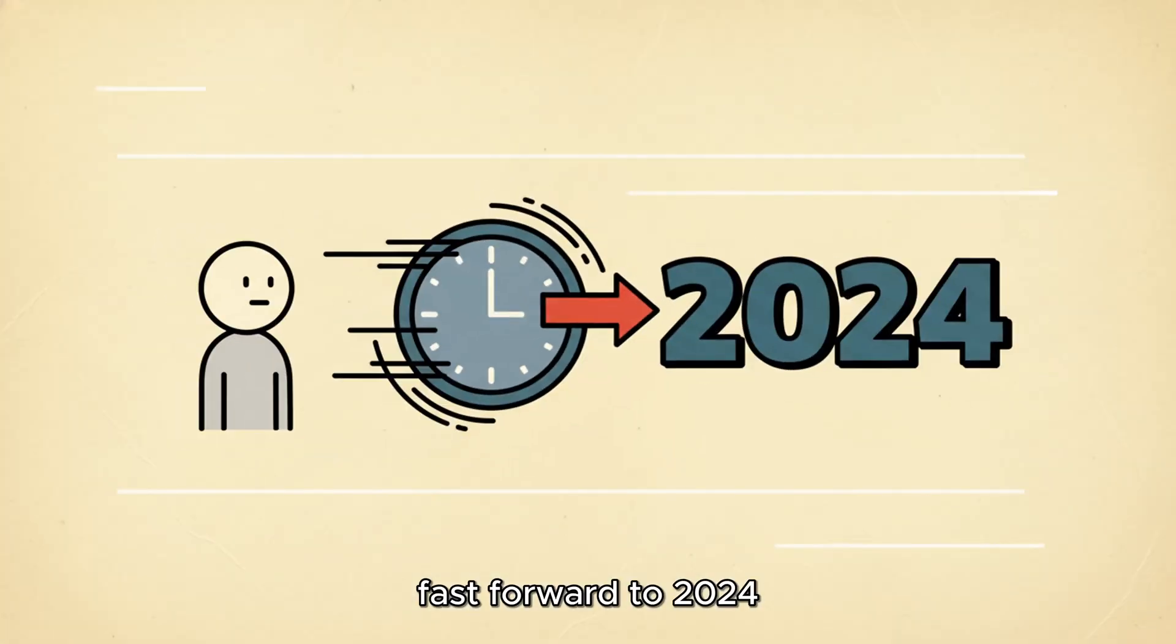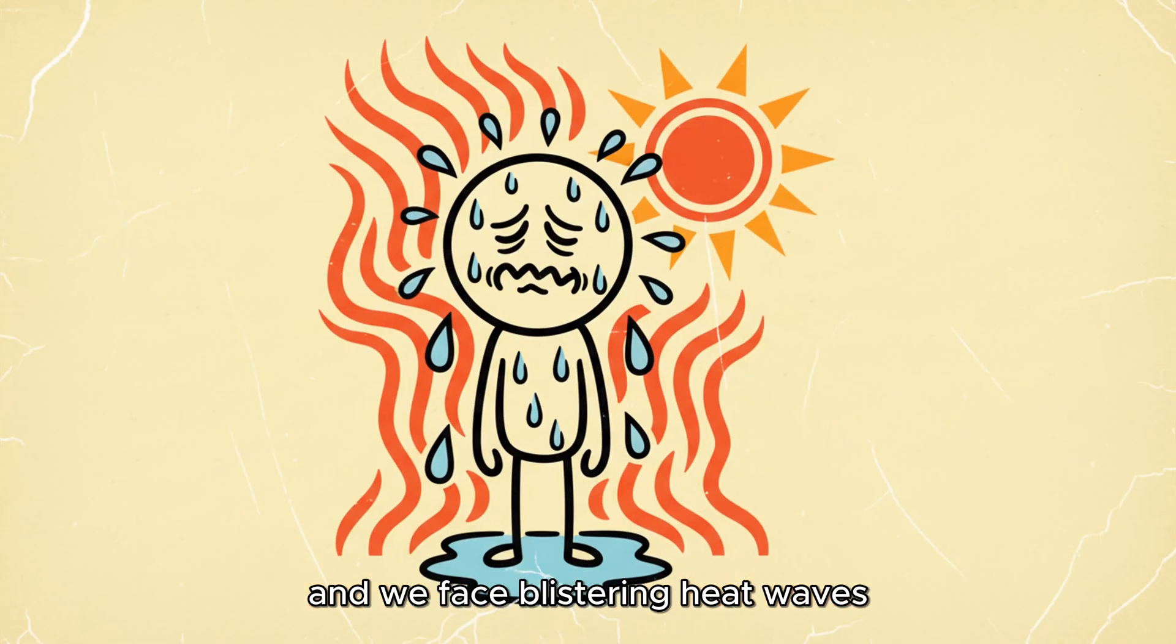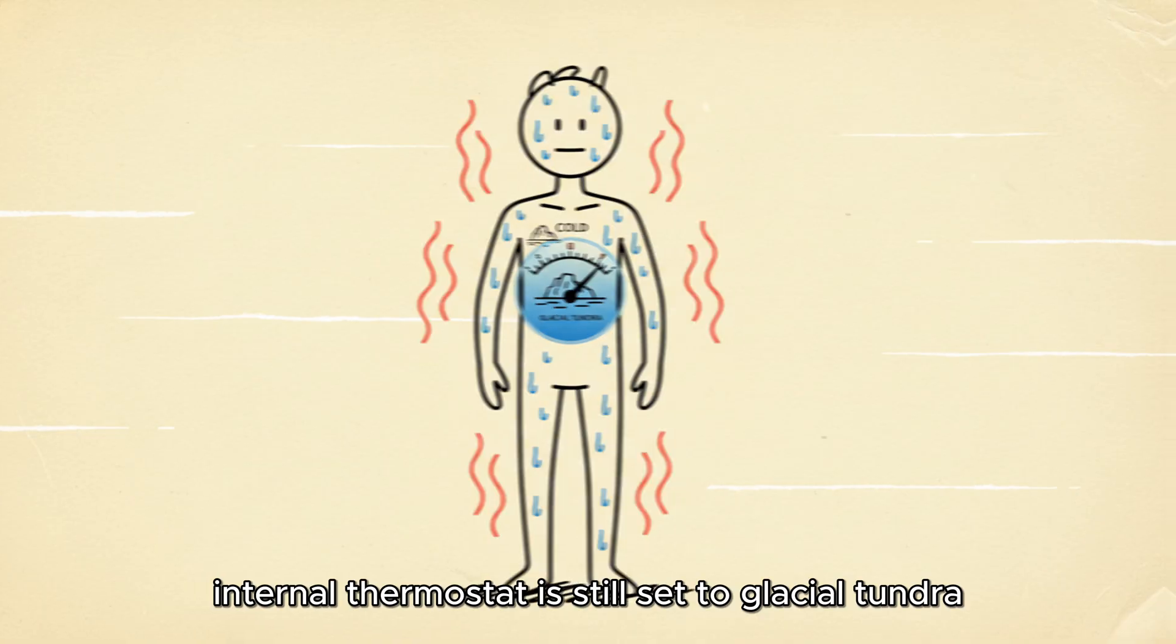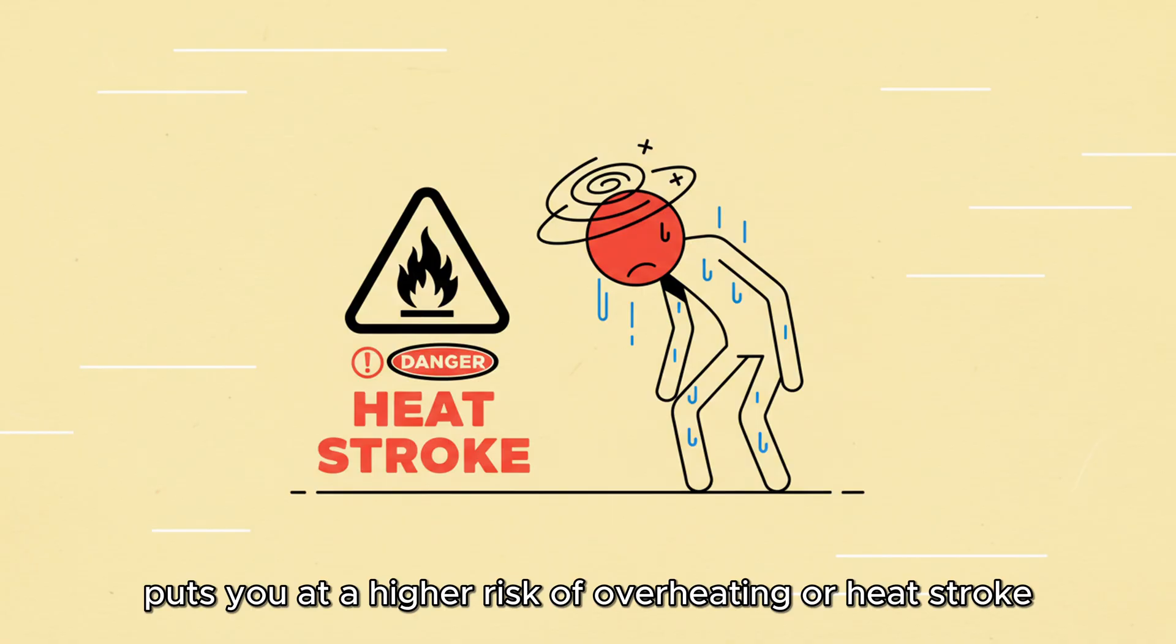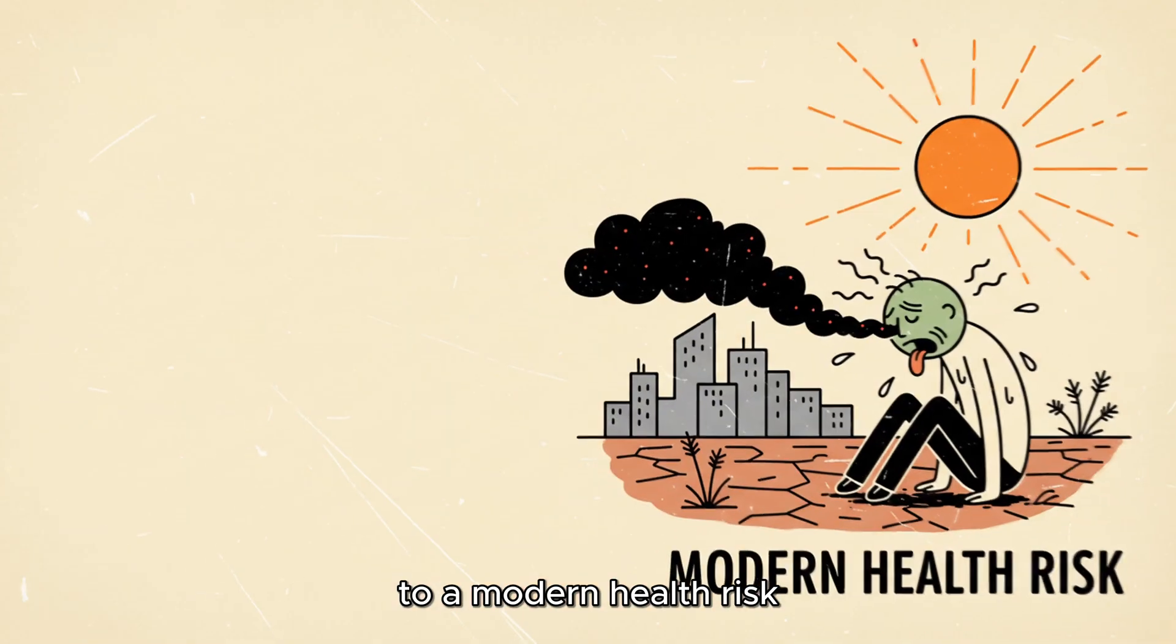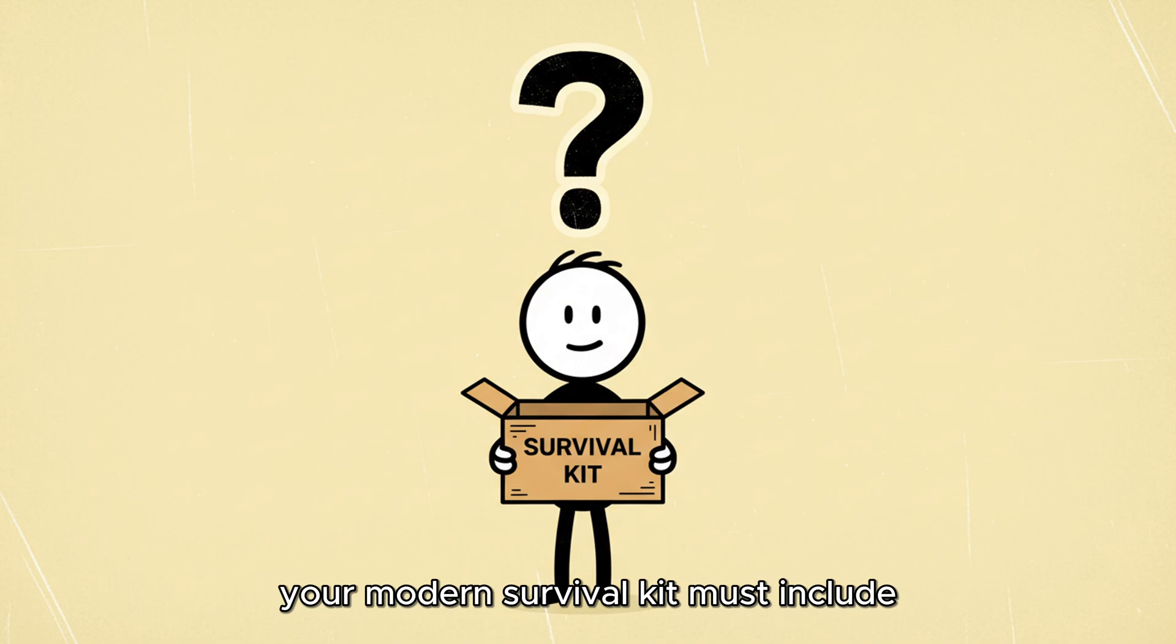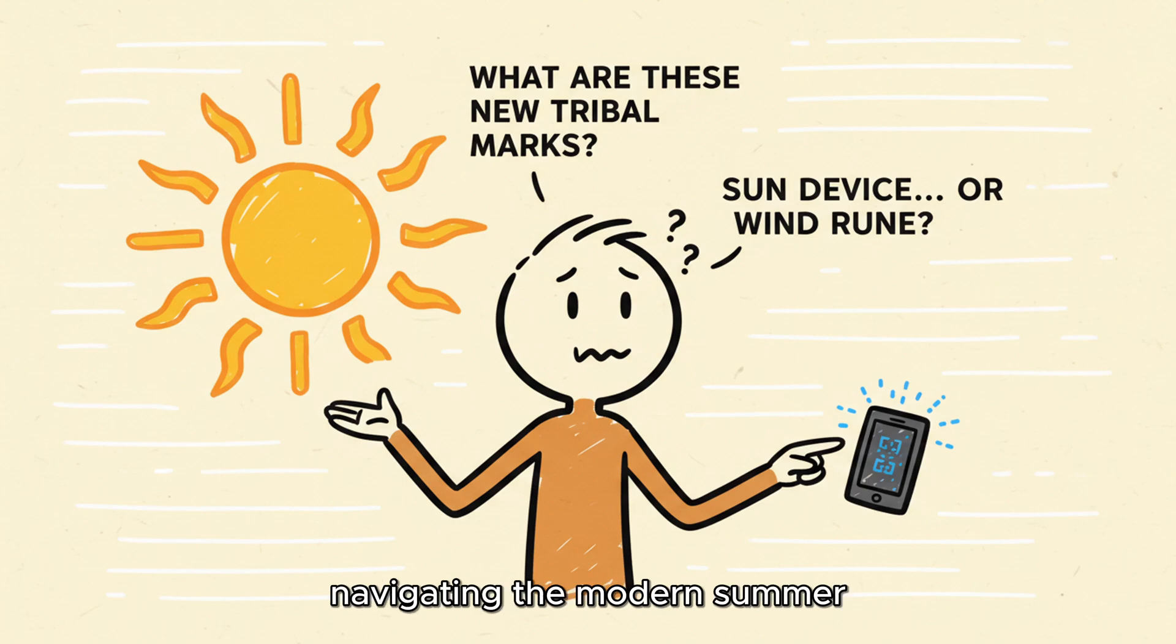Fast forward to 2024. We live in cities, we work out indoors, and we face blistering heat waves. Your body's internal thermostat is still set to glacial tundra, and its inability to shed heat efficiently puts you at a higher risk of overheating or heat stroke. This trait is a perfect example of a genetic feature that went from a massive survival advantage to a modern health risk. If you notice your low sweat, your modern survival kit must include constant hydration, light clothing, and respecting the heat. Your ancient body needs help navigating the modern summer.